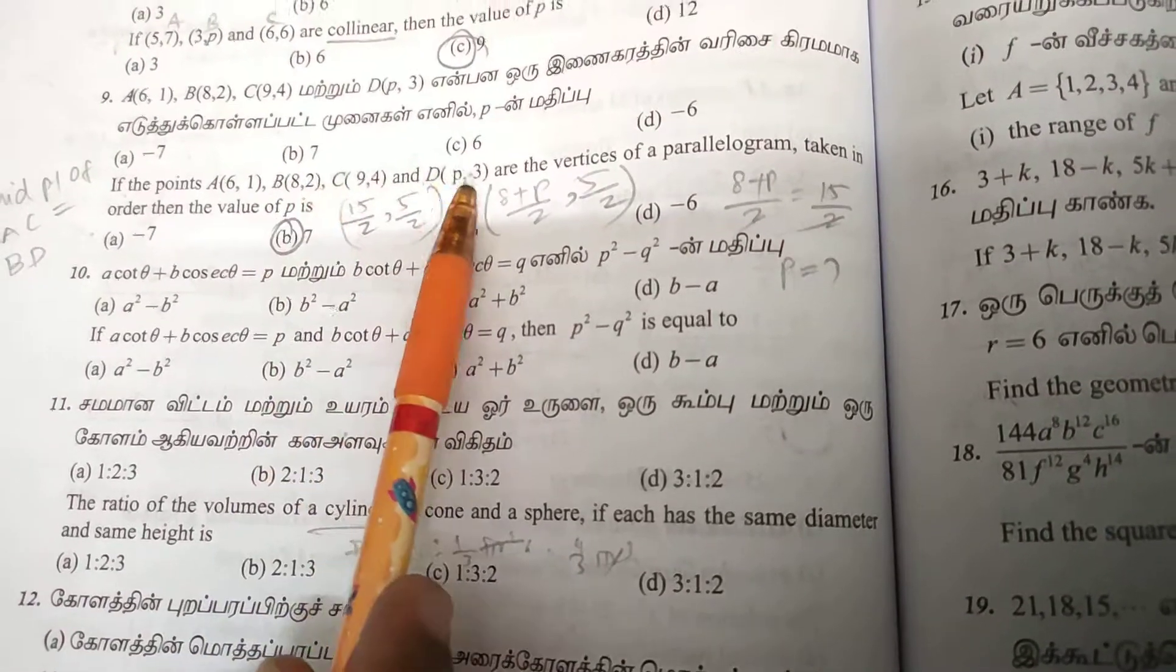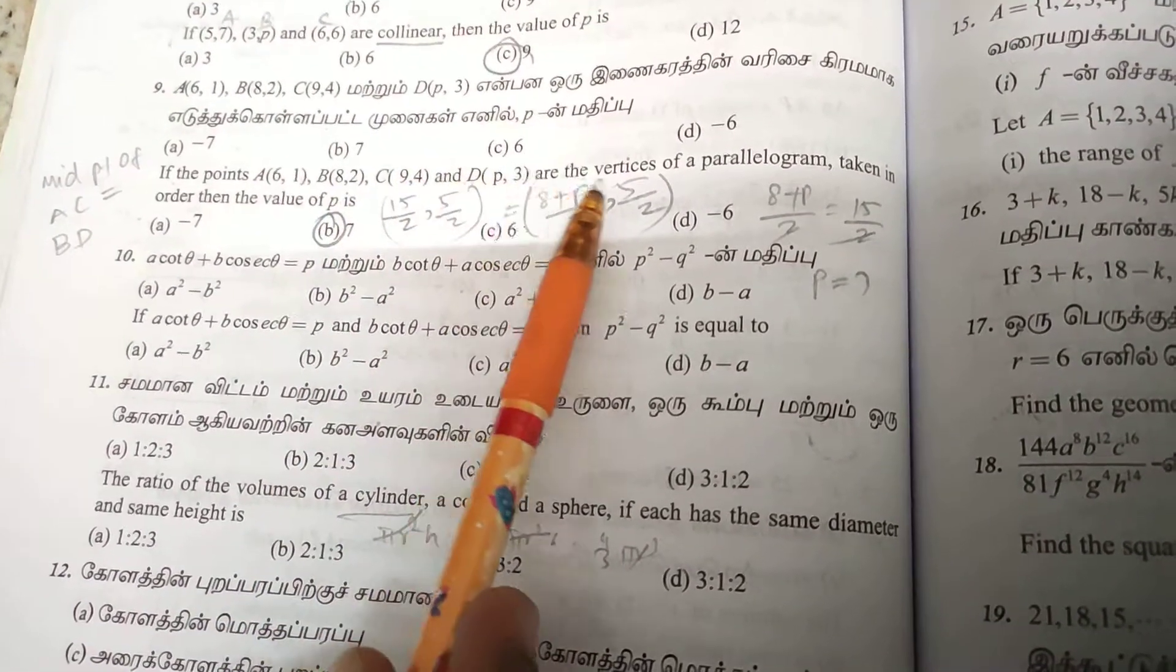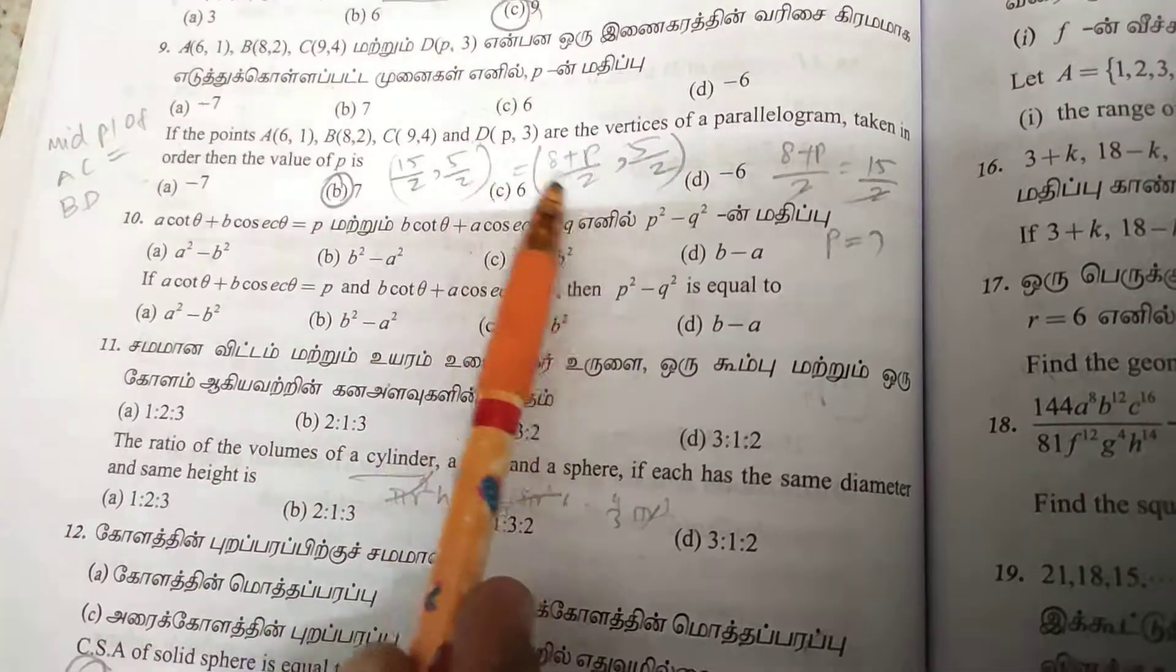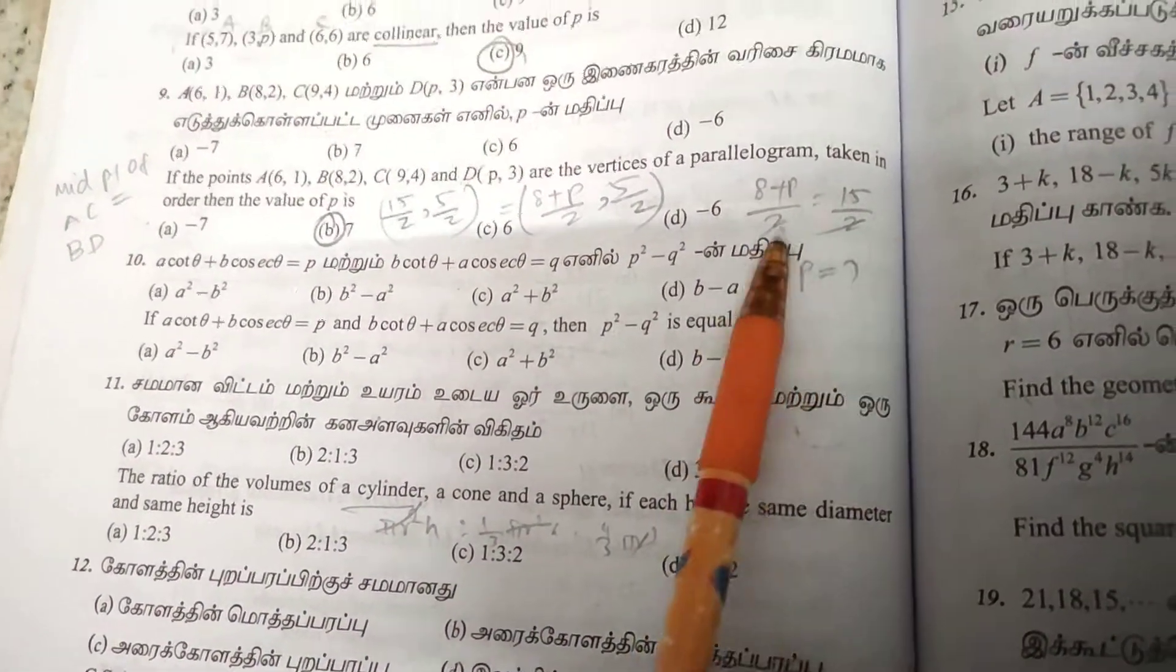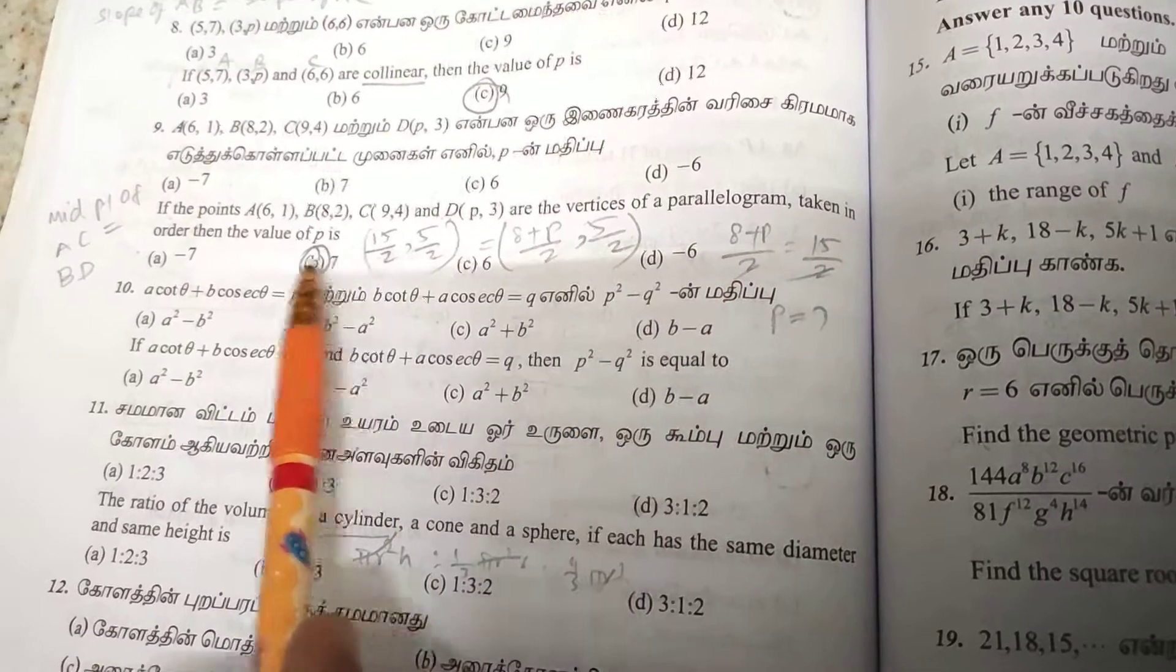For BD: (8+P)/2 and (2+3)/2 equals 5/2. Since the y-coordinates are equal, 5/2 equals 5/2. For x-coordinates: 15/2 equals (8+P)/2, so 15 equals 8+P, giving P equals 7.